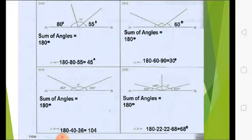So what we will do? We will do simple subtraction. 180 minus 60 minus 90 and the answer will be 30 degrees. So our unknown angle is 30 degrees.